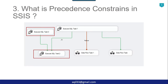What are precedence constraints in SSIS? Precedence constraints are the green, red, or grey connectors that connect tasks together. If there is a green connector, the second task will be executed only after the successful execution of the first task. If there is a red connector between two tasks, the second task will only be executed if the previous task fails. If there is a grey connector used between two tasks, the second task will be executed irrespective of whether the first task succeeded or failed.